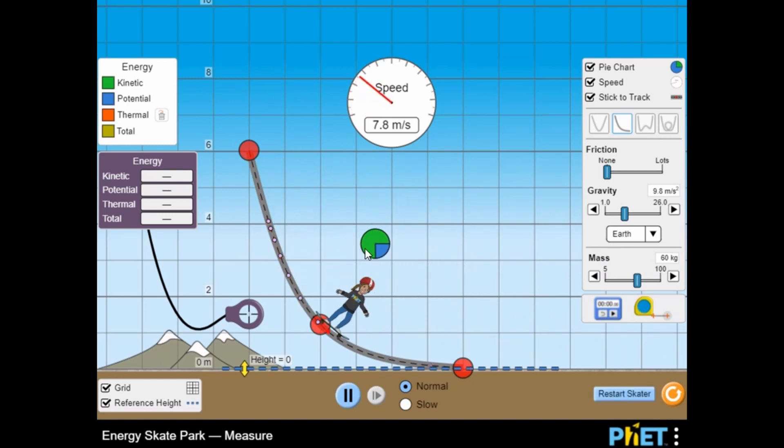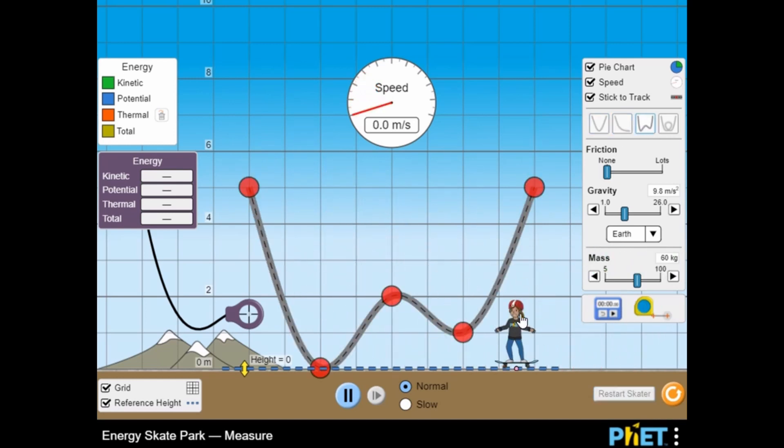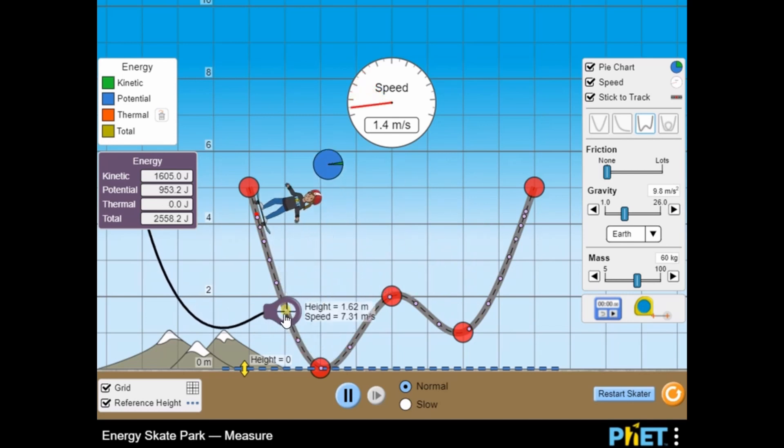Use the mouse to click and select different settings to display interesting information on the simulation. You can display a grid, reference height, pie chart, speed, and alter and change the different factors for the simulation.